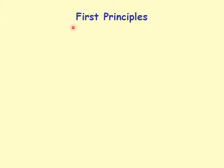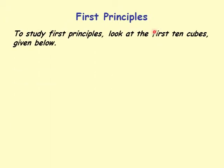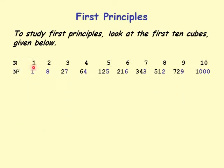Let's discuss first principles as they relate to cubes and cube roots. To study first principles, look at the first 10 cubes: for n = 1, cube is 1; n = 2, cube is 8; n = 3, cube is 27; n = 4, cube is 64; n = 5, cube is 125; n = 6, cube is 216; n = 7, cube is 343; n = 8, cube is 512; n = 9, cube is 729; and n = 10, cube is 1000.